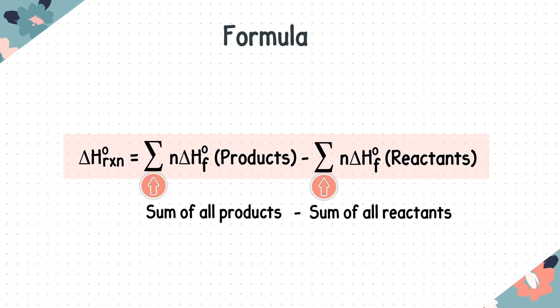This symbol is the summation symbol, meaning we take the sum of all of the products and subtract it from the sum of all of the reactants. N refers to moles, which we find by looking at the coefficients in the balanced chemical equation.